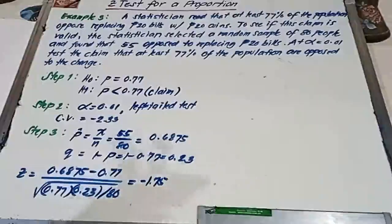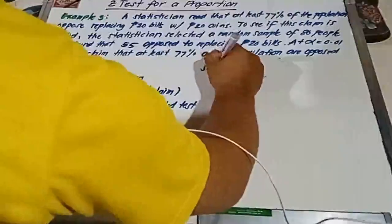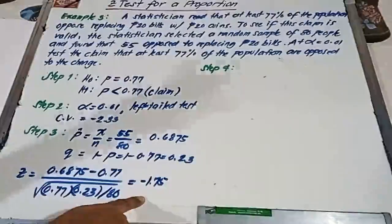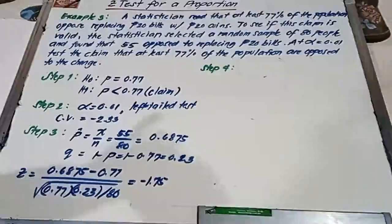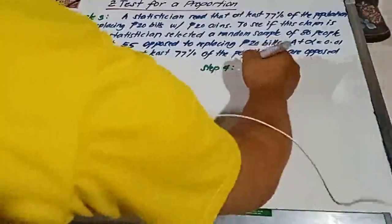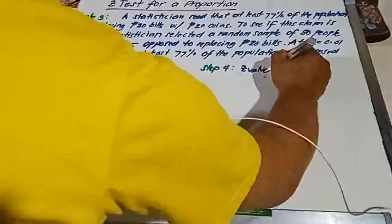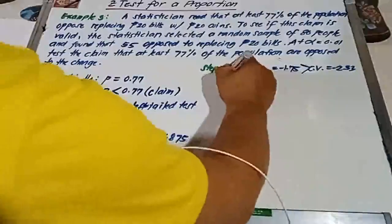For step number 4, we're going to make a decision. Our negative 1.75 is outside of the rejection region. Therefore, since our computed Z value is equal to negative 1.75 and this is greater than our critical value of negative 2.33, our decision is do not reject the null.